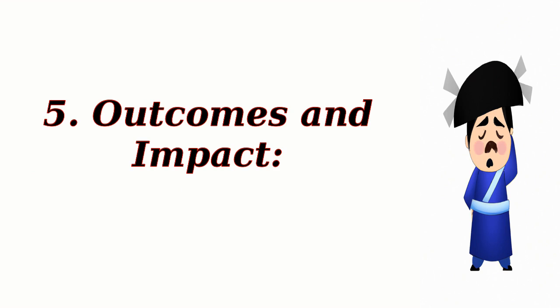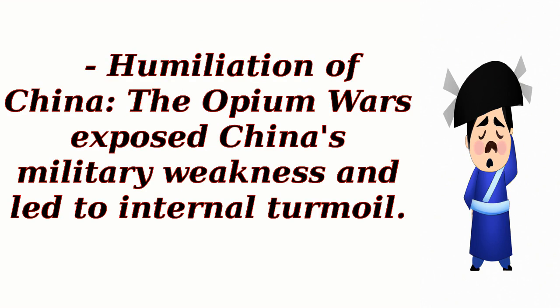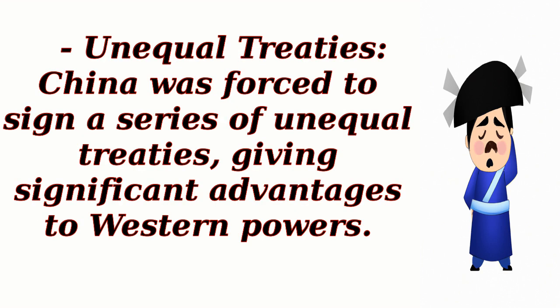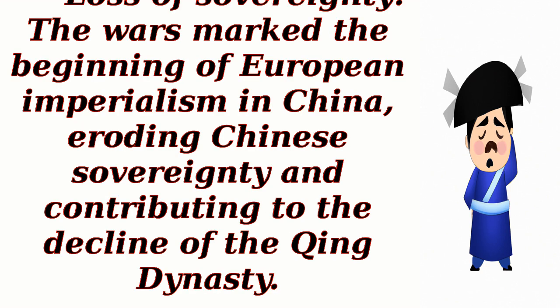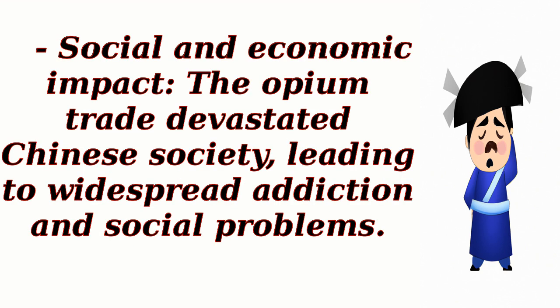Outcomes and Impact: The Opium Wars exposed China's military weakness and led to internal turmoil, resulting in the humiliation of China. China was forced to sign a series of unequal treaties, giving significant advantages to Western powers. The wars marked the beginning of European imperialism in China, eroding Chinese sovereignty and contributing to the decline of the Qing Dynasty. The opium trade also devastated Chinese society, leading to widespread addiction and social problems.